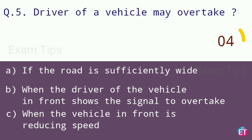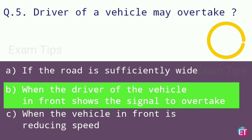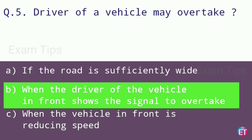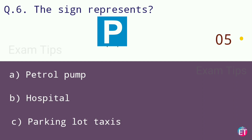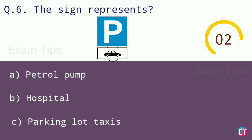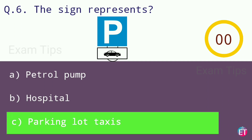The driver of a vehicle may overtake when the driver of the vehicle in front shows the signal to overtake. The sign represents parking lot taxis.